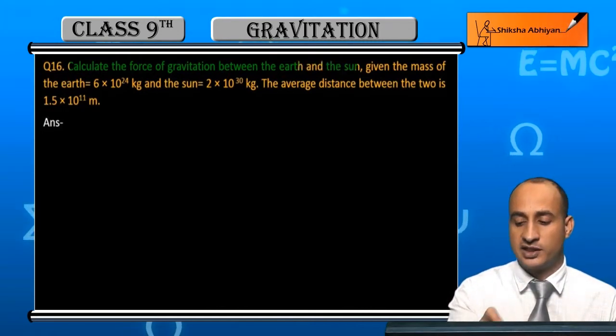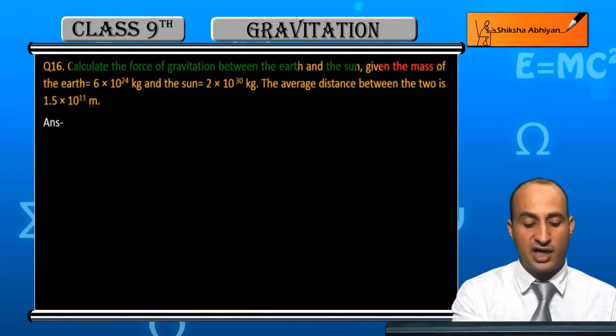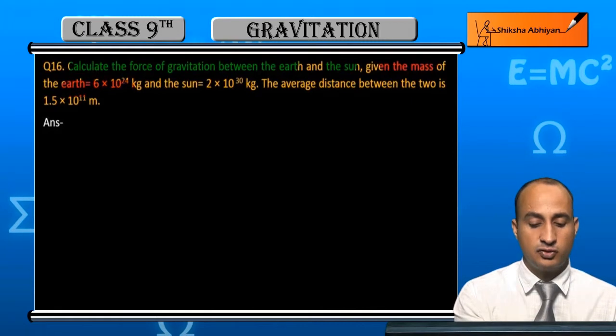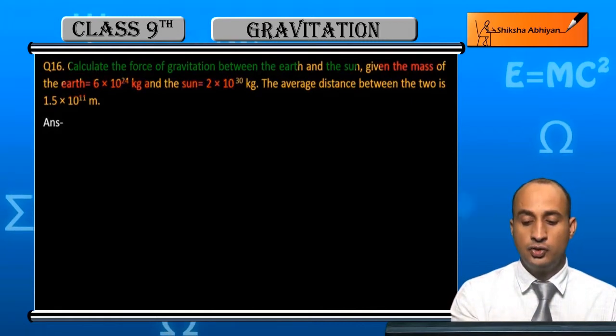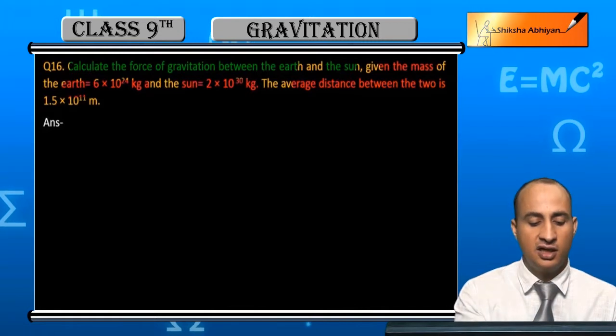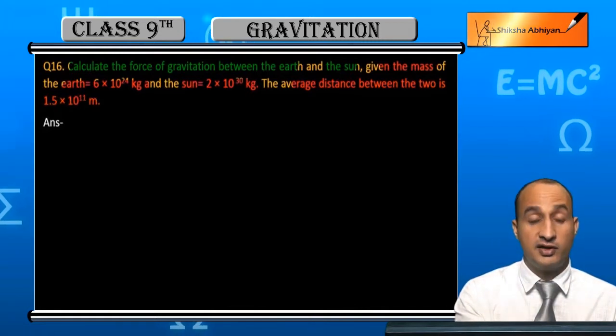Given the mass of the Earth is 6×10²⁴ kg and the Sun is 2×10³⁰ kg. The average distance between them is 1.5×10¹¹ meters.